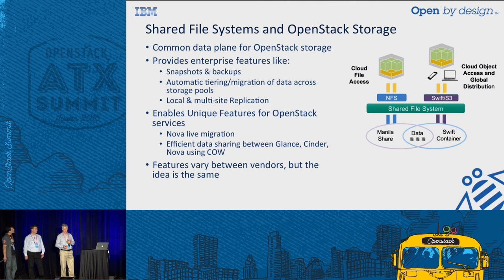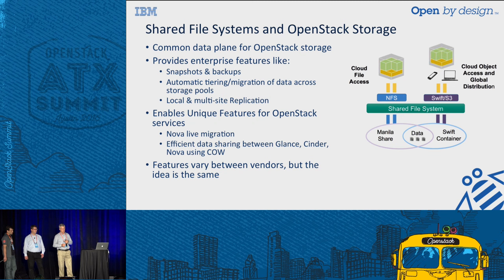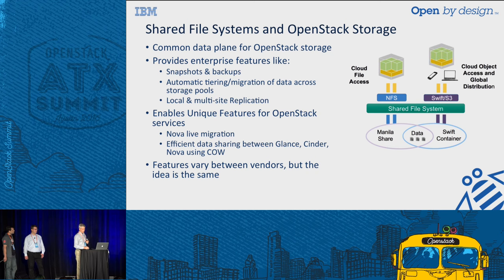A shared file system enables some unique features within OpenStack. One example is Nova Live Migration — if Nova is backed by a shared file system, you can move a VM from one compute node to another basically transparently. Also, the ability to share data between Glance, Cinder, and Nova using a copy-on-write mechanism is a powerful feature, allowing you to efficiently use data and quickly provision new systems. The features vary between different vendors, but the benefits of that common data plane are consistent.